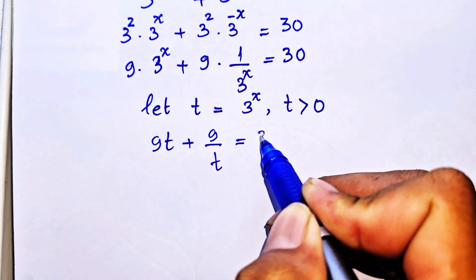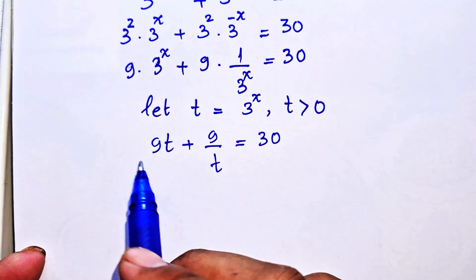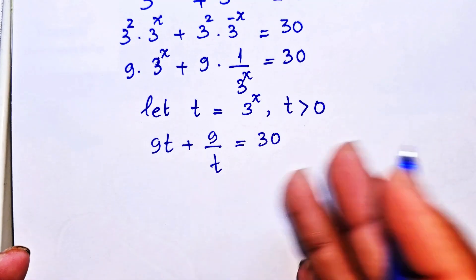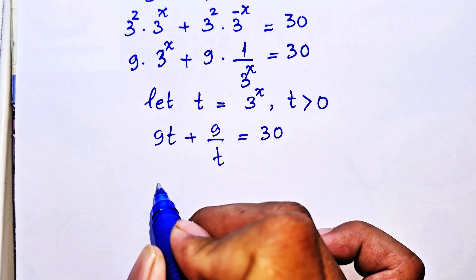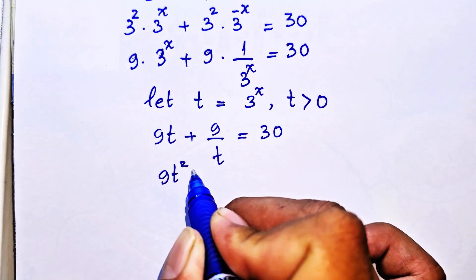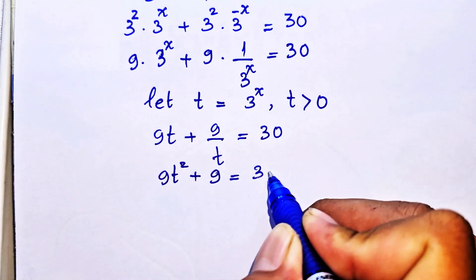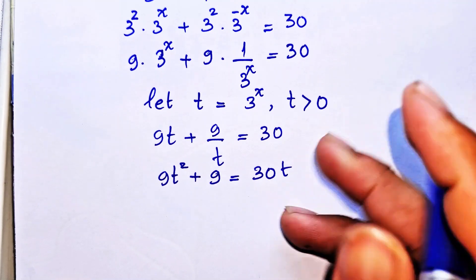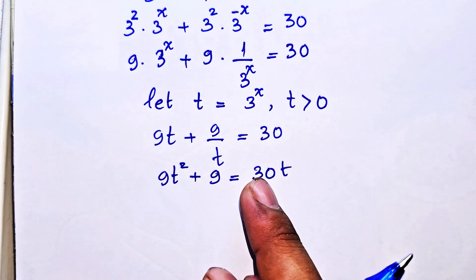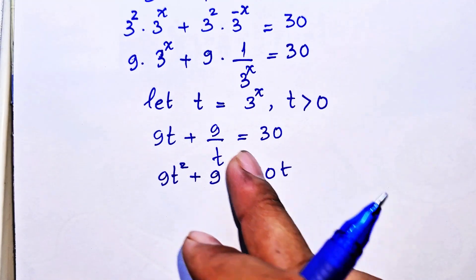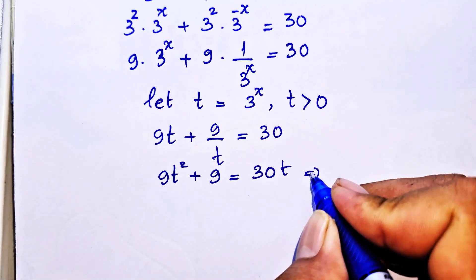Now we get a new equation in terms of t: 9t plus 9 divided by t equals 30. We then multiply both sides of the equation by t, so we get 9t² plus 9 equals 30t.